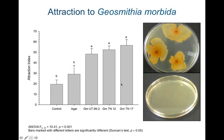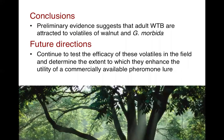We collected the volatiles from those and compared the response of the beetles to those collections versus un-colonized agar plates and also to the solvent control. The y-axis is the attraction index and the x-axis shows the fungal isolates. We found they were in fact attracted to the fungal symbiont, Geosmithia morbida. We're currently characterizing the volatiles unique to those colonized agar plates and testing the response of the beetles to those synthetic compounds. Preliminary evidence suggests that adult walnut twig beetle are attracted to volatiles of both walnut and Geosmithia morbida.